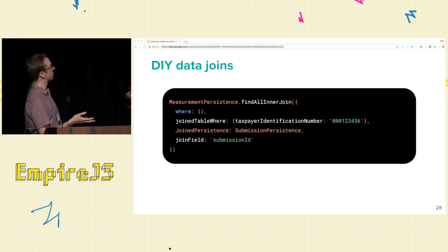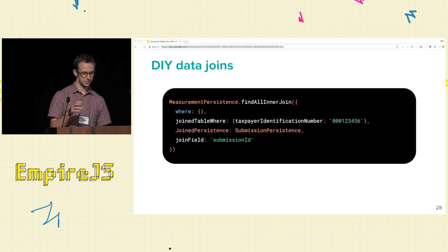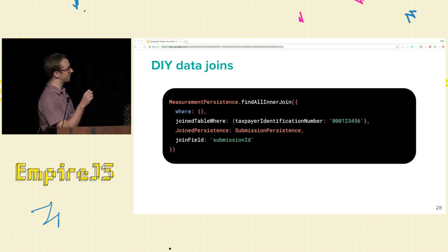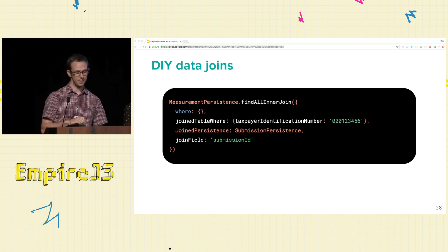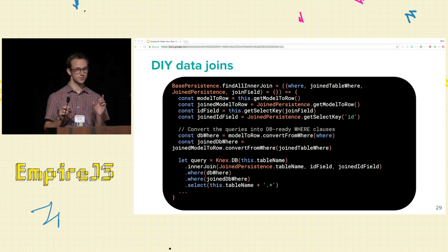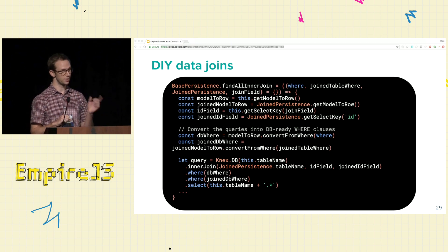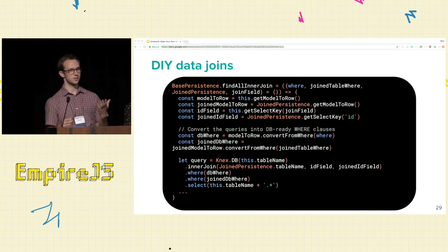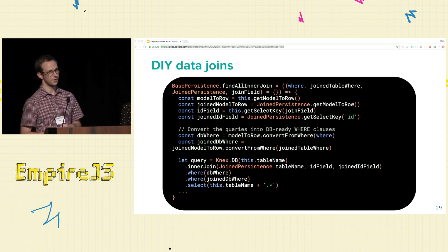Here's what the analogous join function looks like in our codebase. It calls a function with a where clause for the measurements table, a where clause for the submissions table, the persistence layer to join on, and the join field. It takes those where clauses, serializes them with the respective persistence layers, and uses Knex to write a join statement. Writing this function by hand is cumbersome for sure, but one really nice thing is that we know exactly what is being run on our database.